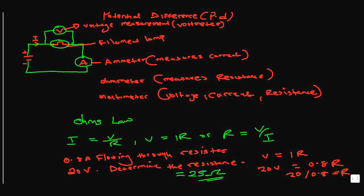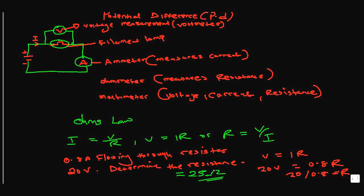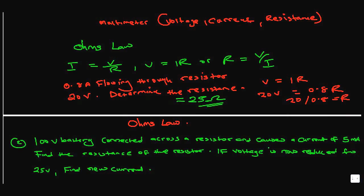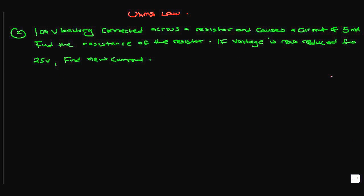We're going to do one more problem with Ohm's Law — V = IR, voltage equals current times resistance. A 100-volt battery is connected across a resistor and causes a current of 5 milliamps to flow. Determine the resistance of the resistor. And if the voltage is reduced to 25 volts, what would be the new value of current flowing?